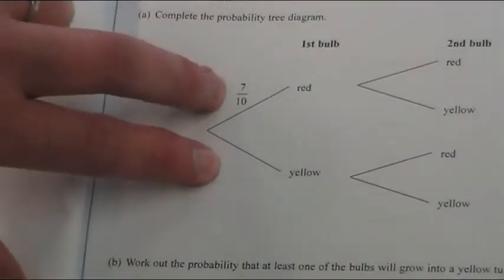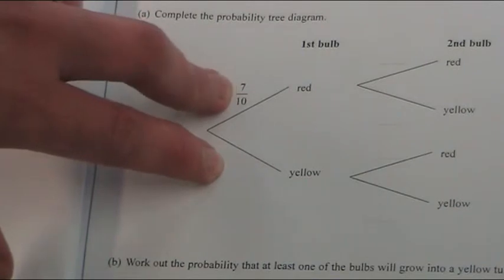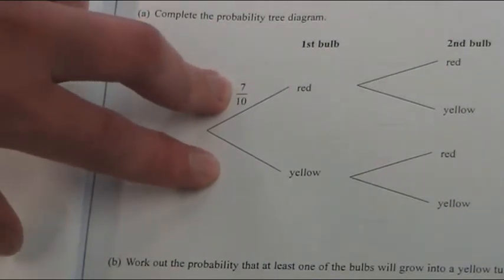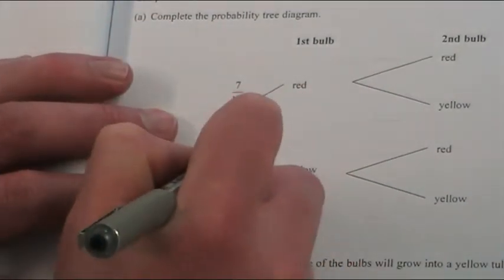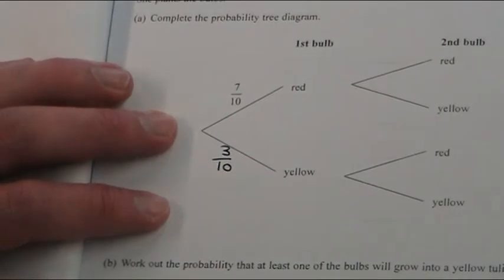Now with probability, either side of the branch must always add up to 1 because it's certain, hence a 1, that it's going to be either a red or a yellow. So that has to be 3 over 10.